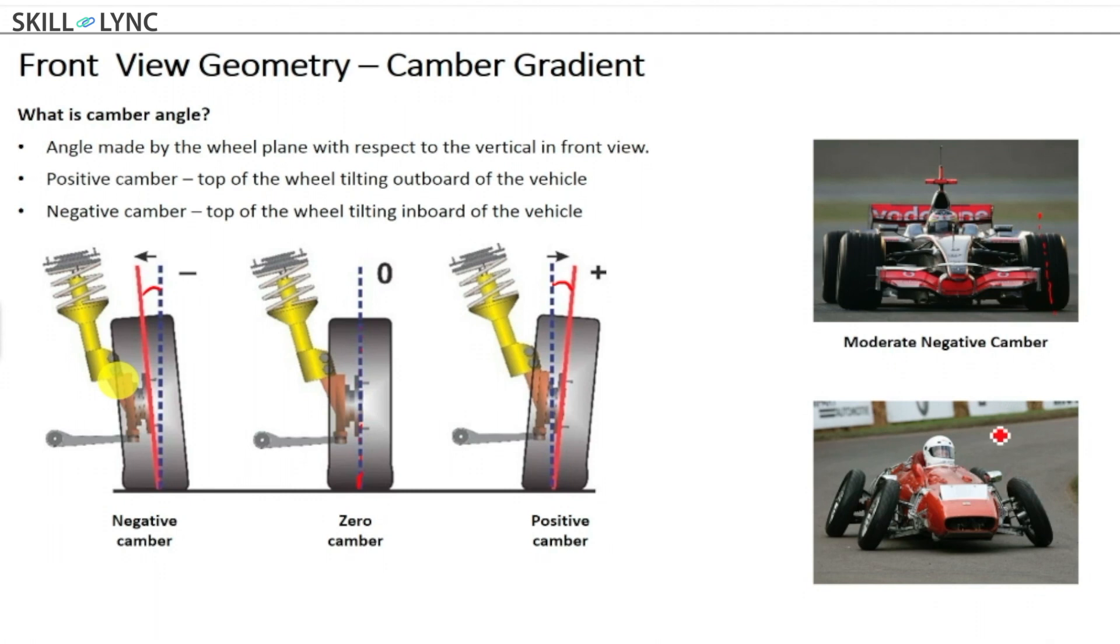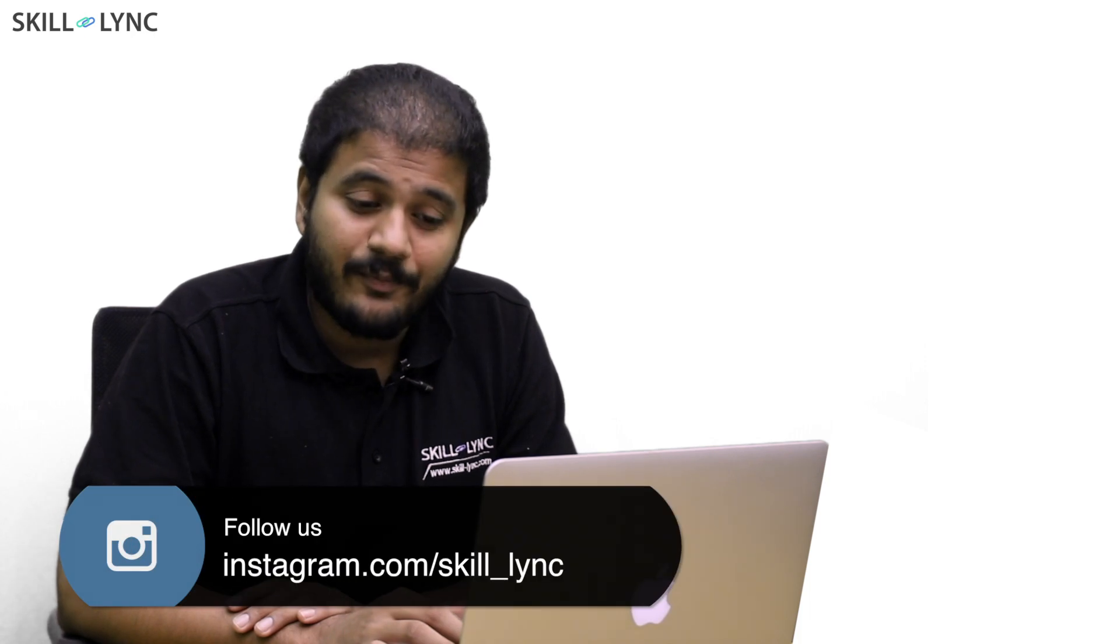So let's take a look at a couple of real world examples. Here you can see this F1 car, there is a very small negative camber, right? And in this particular case, the negative camber is quite extreme.